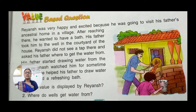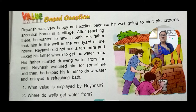The story is like this: Riyanj was very happy and excited because he was going to visit his father's ancestral home in a village. After reaching there, he wanted to have a bath. His father took him to the well in the courtyard of the house. Riyanj did not see a tap there and asked his father where to get the water from. His father started drawing water from the well. Riyanj watched him for some time and then he helped his father to draw water and enjoyed a refreshing bath.